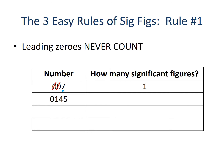Next we have 0.145. Rule number one says that leading zeros never count, so that zero at the beginning is not important to us, but the one, the four, and the five are. So 0.145 has three significant figures.